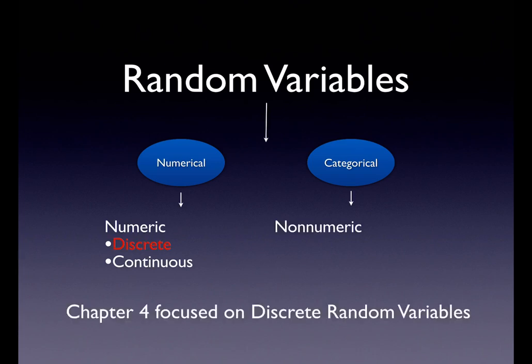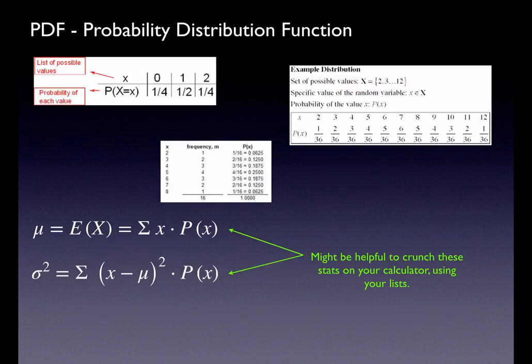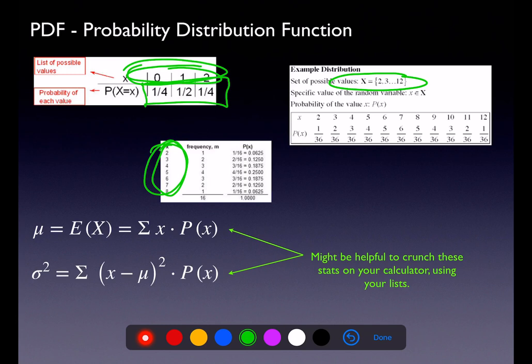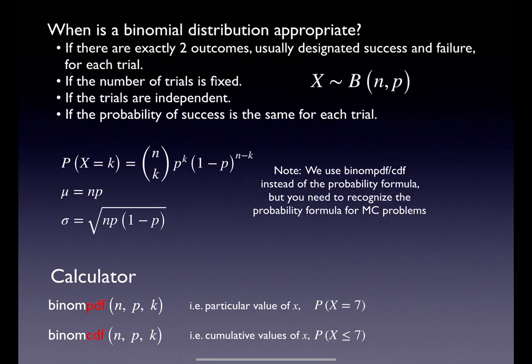Chapter 4 dealt with discrete. We took a look at PDFs — this is where you could make a list of your sample space, which is different from continuous. In chapters 5 and 6, we couldn't make a list of the possible values; we had to give a range. But if you could make a list with a discrete numerical variable, make that table, and those probabilities have to total out to 1. You have your mean formula, your variance formula, and you could calculate probabilities. Then we had the special case: the binomial.